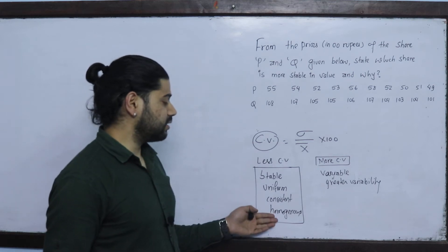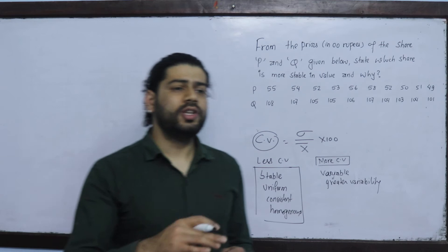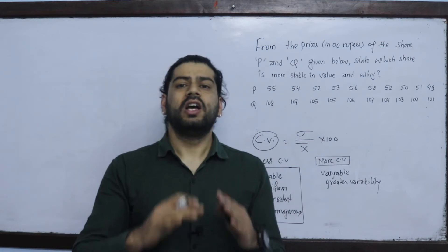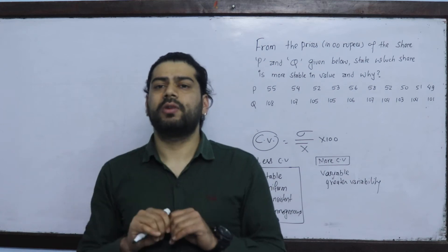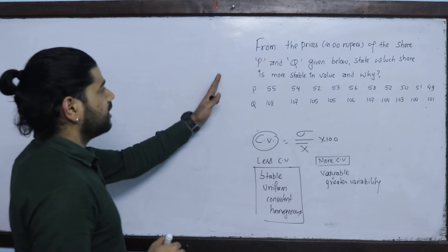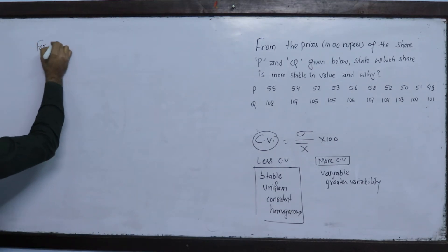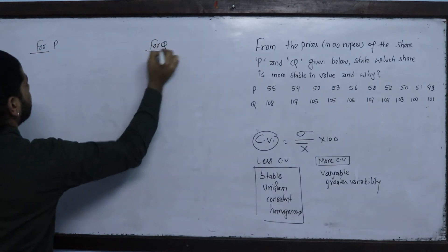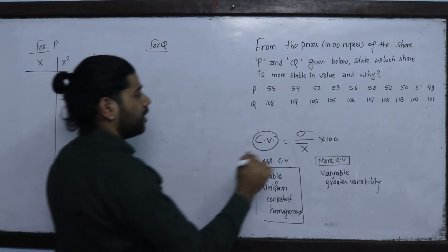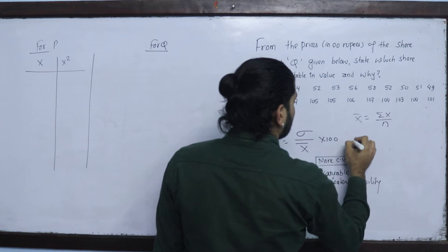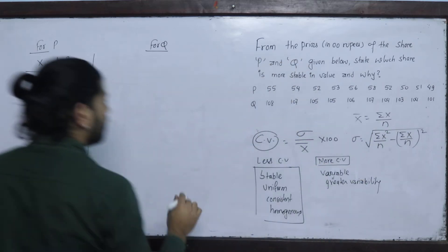Whichever data has a lower coefficient of variation is more homogeneous, more consistent. The coefficient of variation measures the degree of variation in the data. For uniform type of data, CV is less in comparison. We will now look at the standard deviation and coefficient of variation for share P and share Q. We have columns x and x².